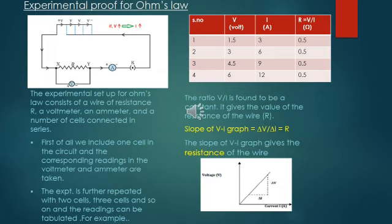Experimental proof for Ohm's result: The experimental setup consists of a wire of resistance R of length XY, a voltmeter and ammeter, and a number of cells connected in series. First we include one cell in the circuit and take the corresponding readings in the voltmeter and ammeter. The experiment is further repeated with two cells, three cells and so on, and the readings can be tabulated.